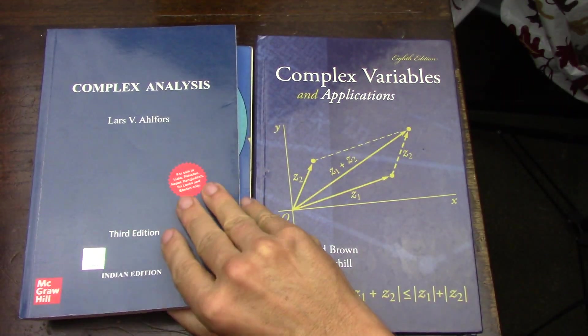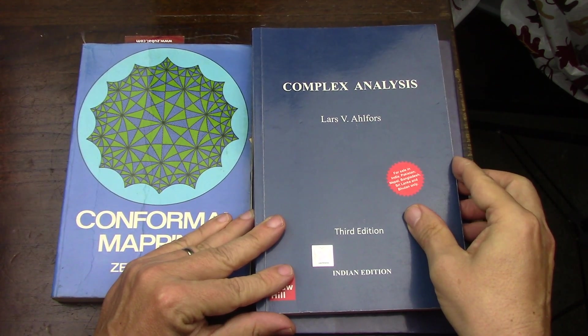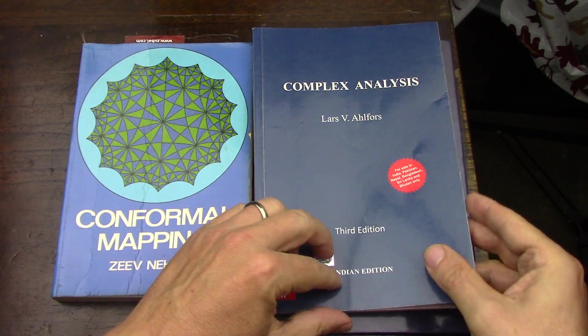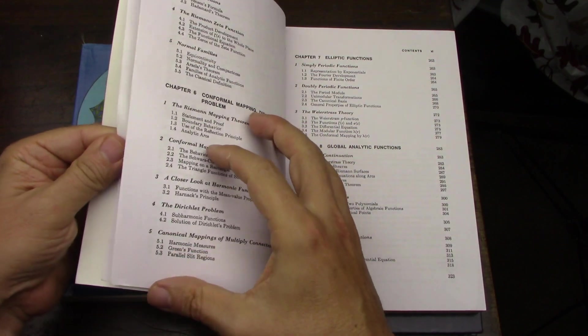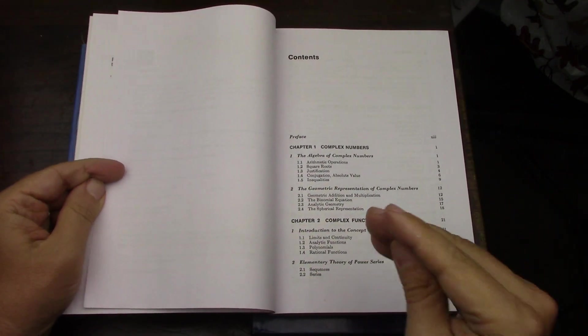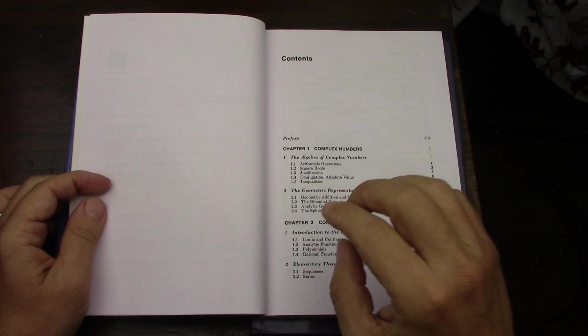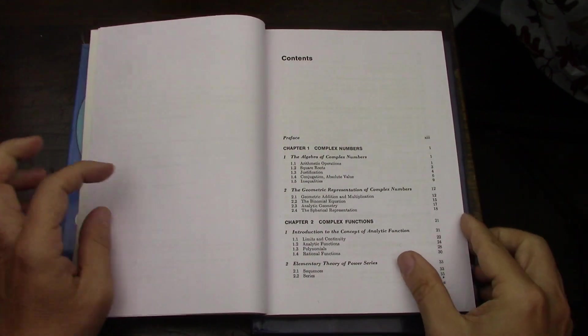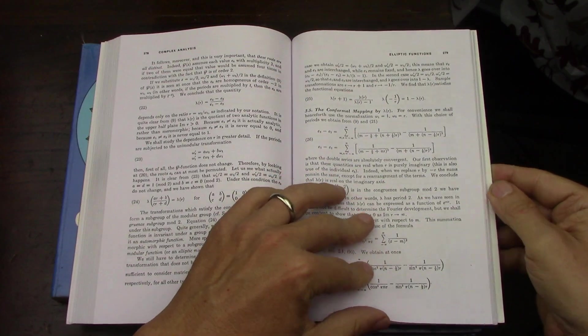Ahlfors is sort of like the baby Rudin of analysis, but I believe it's actually better because it's really well-written and really approachable. I continue to find, to this day, every time I look for a concept that I consider advanced and interesting, it is in here. I was even looking at subharmonic functions, and it's somewhere back here. Just as a test, I'm gonna do it right here. Subharmonic functions, page 245.